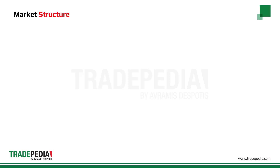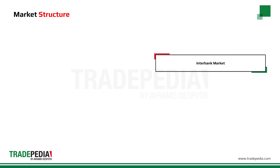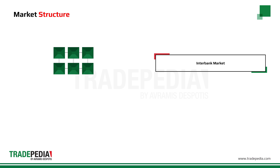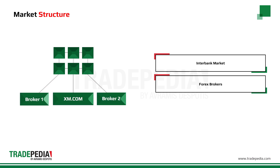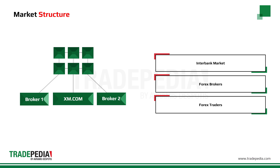This global market has three levels of participants. The first level is called the interbank market, where the biggest banks exchange currencies with each other. Even though it only has a few members, most of the five trillion a day volume ends up here. The second level is the big Forex brokers that have direct access to the interbank market to trade bulk amounts for their clients or smaller brokers. The third level is small Forex brokers and retail Forex traders. Most retail traders can't access the interbank market directly, so they need brokers in order to trade Forex.